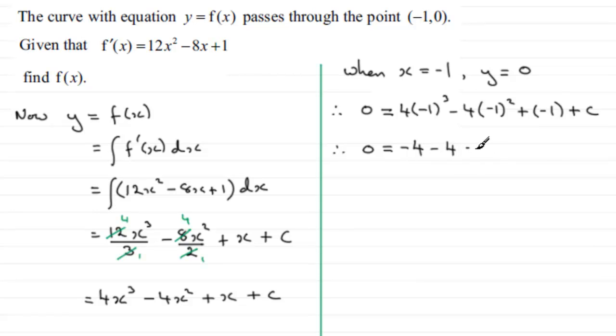And then plus -1, so that's -1, and then plus c. So we've got -9 here plus c, so if I add 9 to both sides, I'm going to get 9 equals c.